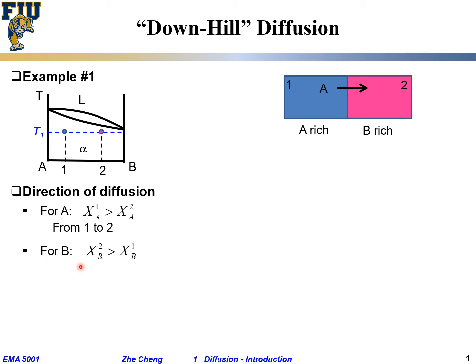Similarly for element B: x_B2, the atom fraction of B in piece two, is greater than in piece one, so piece two is richer in B. The diffusion of B goes from the high concentration of B in piece two back to the low concentration in piece one — the arrow goes backward. This is downhill diffusion: from high concentration to low concentration.